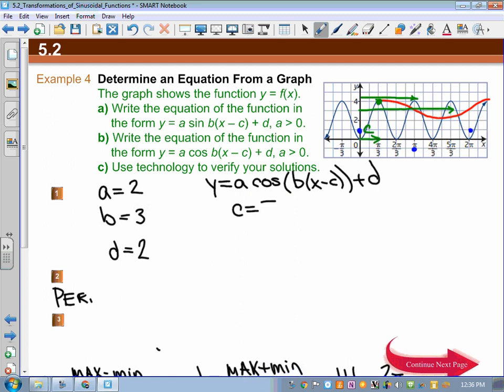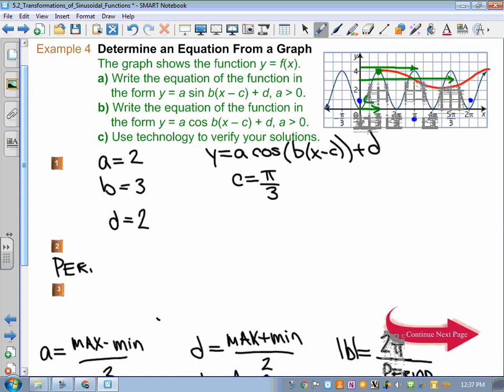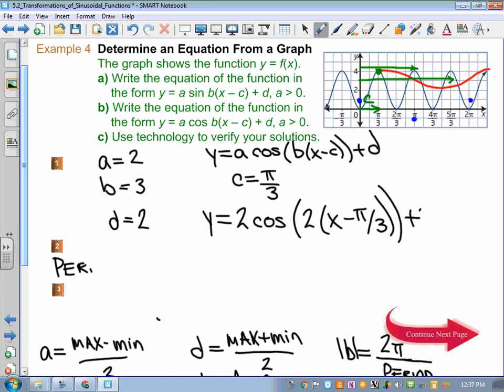And that is frustrating for a lot of students, that when we use cos, y equals a times the cos of b times x minus c plus d, then for cos, c is equal to pi over 3. That is just because sine and cos are offset. And if you do take further math courses, you'll learn how to quickly transform from sine to cos, and it just involves a translation of pi over 2. But for us, this is the information we need. So y is equal to 2 times the cos of 3 times x minus pi over 3 plus 2.